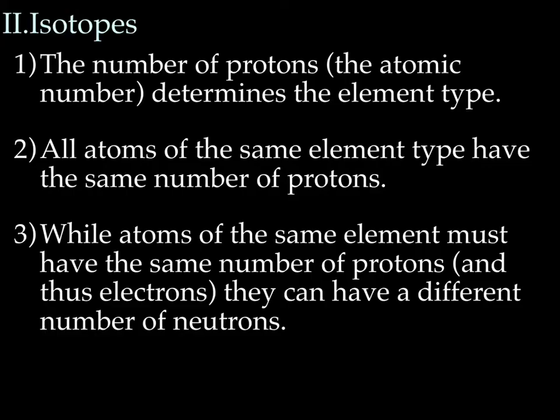So while atoms of the same element must have the same number of protons, and thus the same number of electrons, they can have a different number of neutrons. Remember, neutrons are neutral. And so while with protons and electrons you have to have the same amount so their charges can cancel out, that's not the case with neutrons.